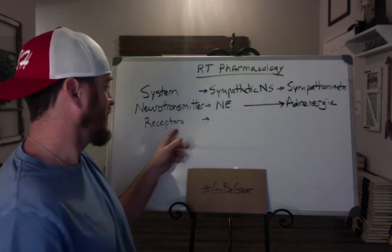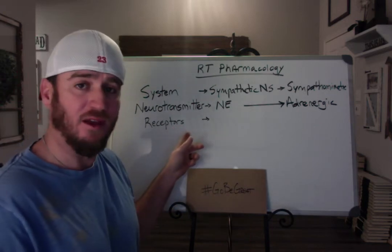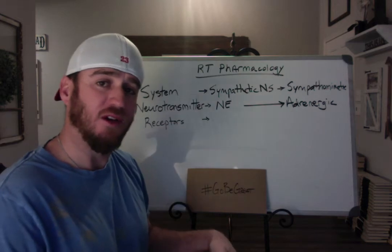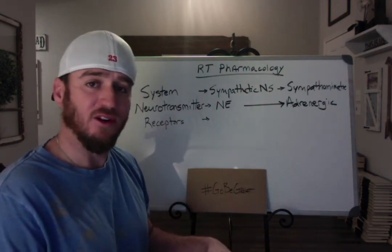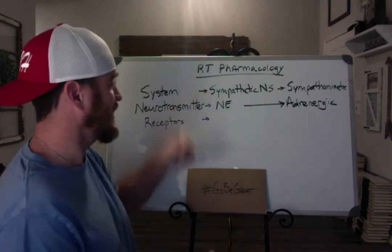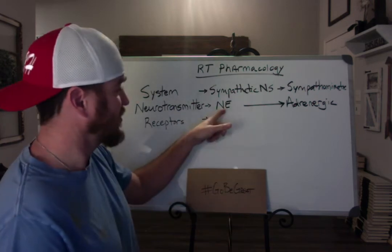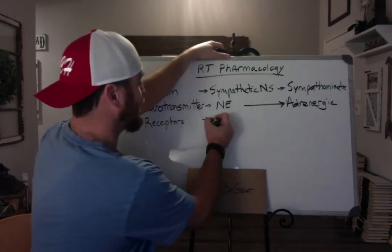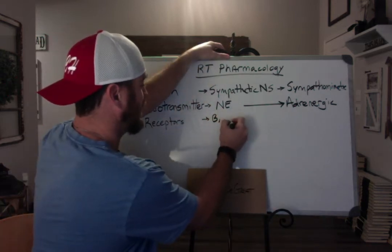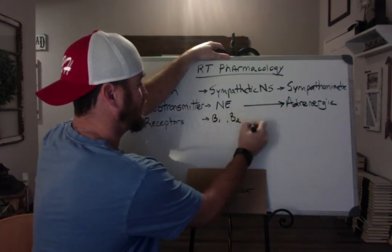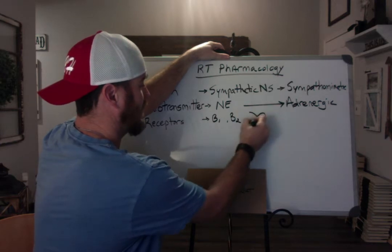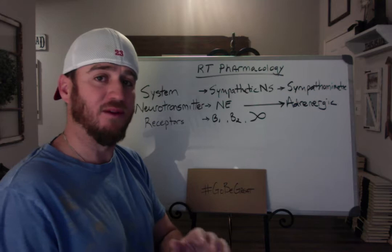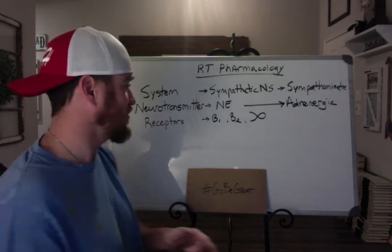The last category is receptors. You have to understand what receptors we're binding to so that when you hear these terms, you understand. In the sympathetic nervous system, the neurotransmitter norepi seeks out three different receptors to bind to: the first is beta-1, the second is beta-2, and the third is alpha receptors. If you remember these three, you'll be able to remember what each receptor does.